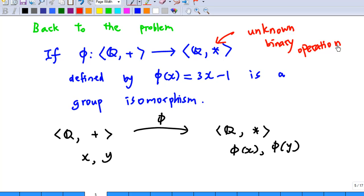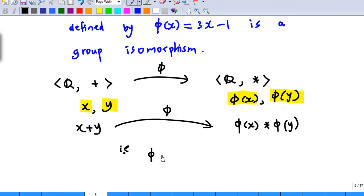Now phi is a group isomorphism. So if the image of x is phi of x and the image of y is phi of y, under the first group we know the binary operation is addition, so we can add them. And then on the right, the binary operation is star, so we can star the images. Now if you have a group isomorphism, then the image of x plus y must be phi of x star phi of y. This means phi of x plus y must be equal to phi of x star phi of y.